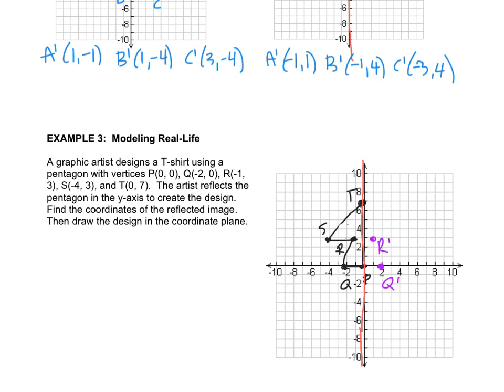And S is four spaces to the left, so I'm going to go four spaces to the right. That is S prime, and now I'm going to connect it in the same order. P, Q, R, S, T.